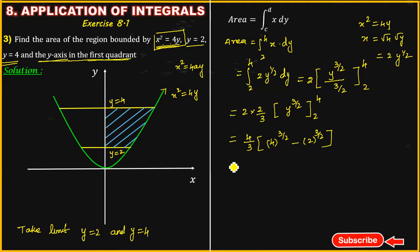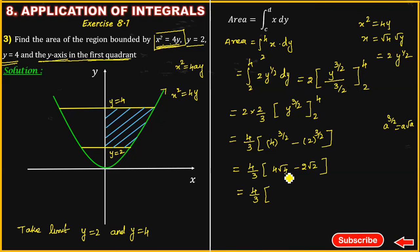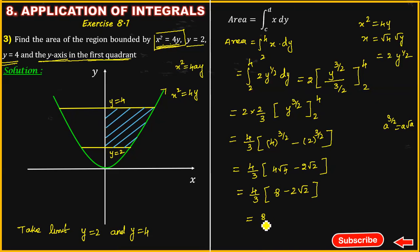Now substitute the limits: 4/3 into (4 to the power of 3/2 minus 2 to the power of 3/2). Here, 4 to the power of 3/2 equals 4 times root 4, which is 8, and 2 to the power of 3/2 equals 2 root 2. So we get 4/3 into (8 minus 2 root 2). Taking 2 as common: 8/3 times (4 minus root 2) square units.